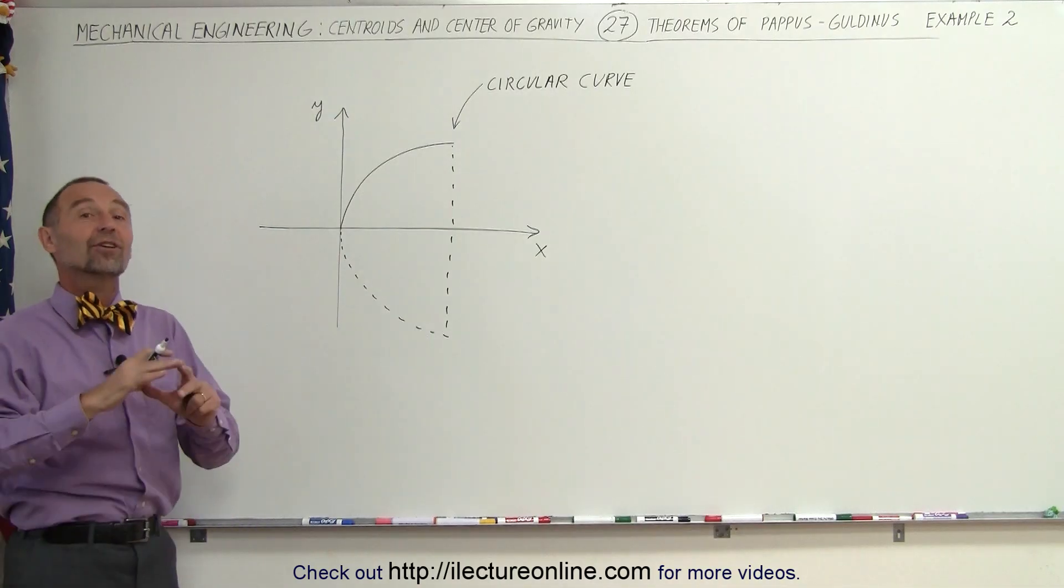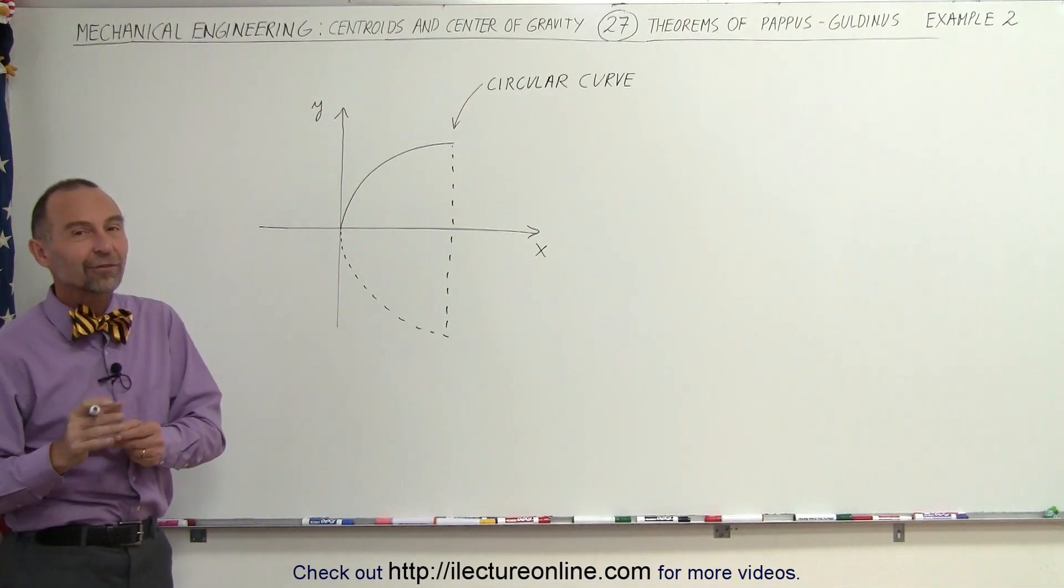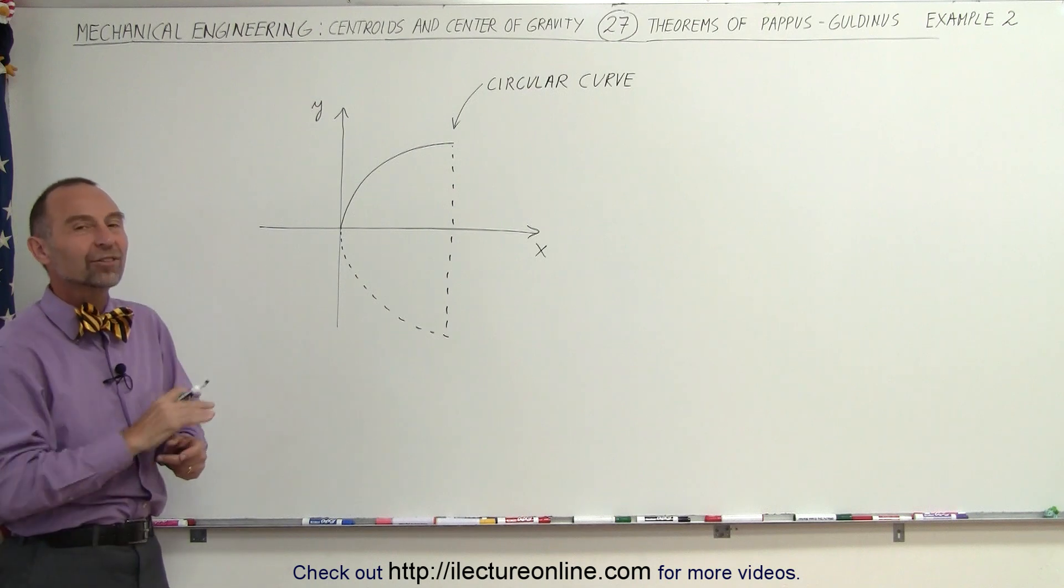Of course, we know what the surface area is of a sphere, and therefore we know what the surface area is of a half a sphere. So let's see how well this theory works.